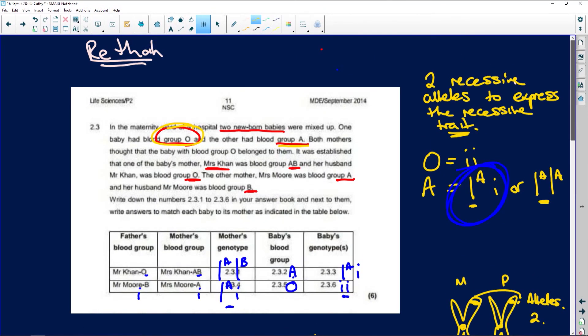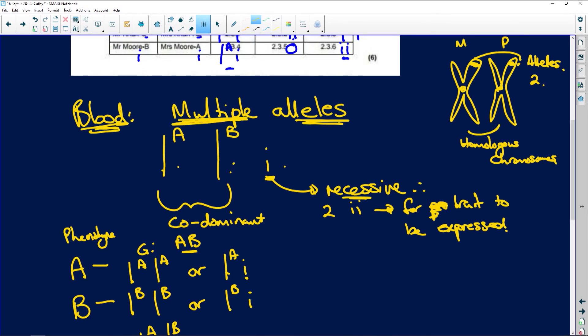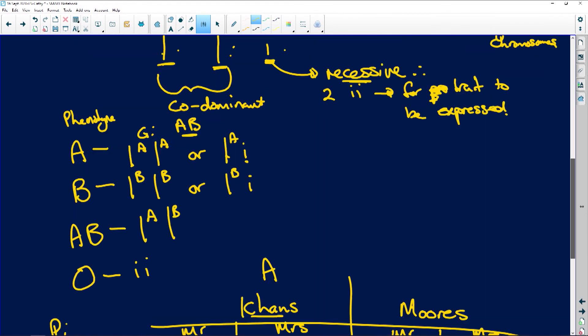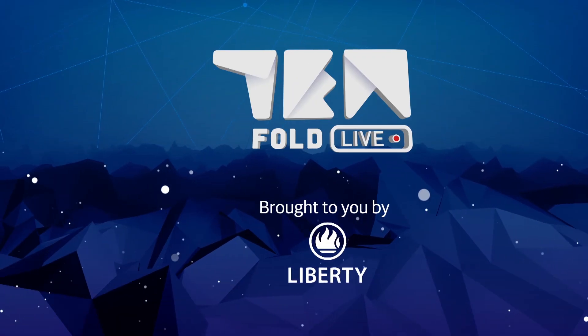So you're going to have the A and B are co-dominant and your two little i's are without a doubt. Your O is without a doubt two recessive. So I hope that helps you. Just what you've got to focus on, please, is this: blood is a multiple allele and it's only A, B and i. And our blood groups, that's what they are. So in order to have a blood group O, you need the two recessives.